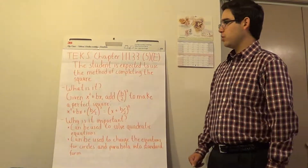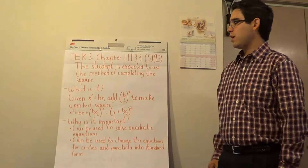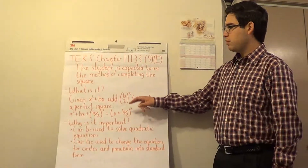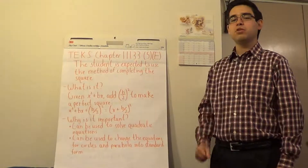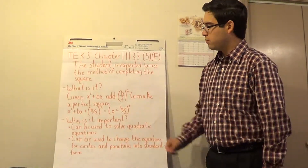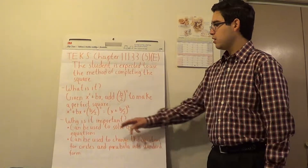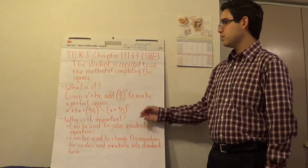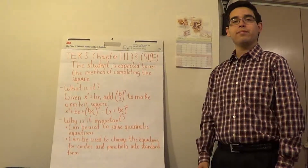Well, if you're given a binomial, namely x squared plus bx, then by adding this number b halves squared, you can make a perfect square. You'll have x squared plus bx plus b halves squared. That'll be equal to x plus b halves squared — a perfect square.